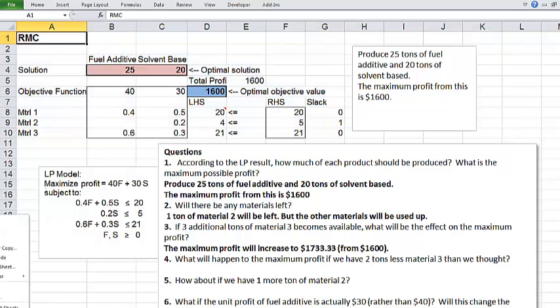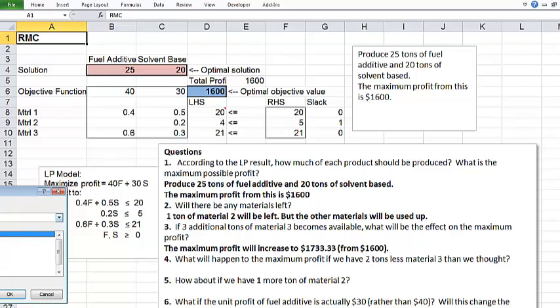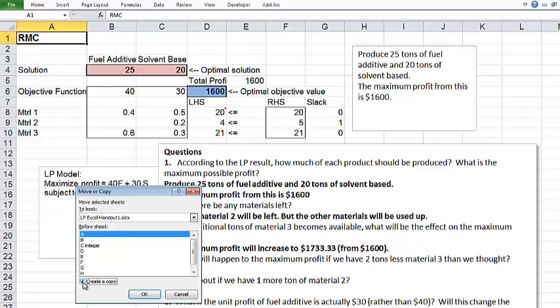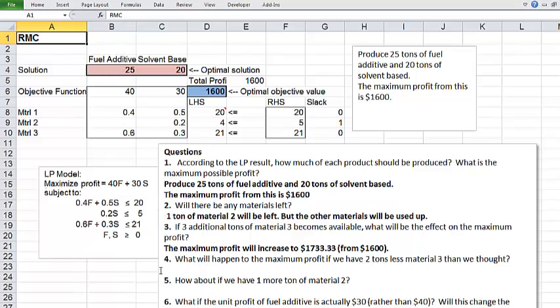So I either right click on the sheet tab, then copy, then I click on create a copy and maybe put the copy just before the next sheet. Say OK. There it is. This new sheet, I'm going to do the work for question 4 and I put all the answers on the original sheet just to keep it organized.